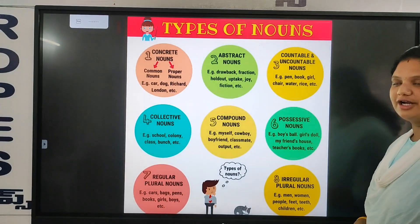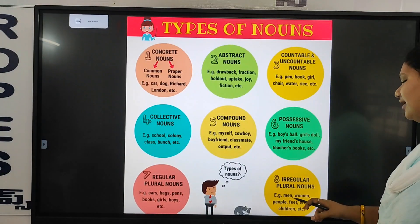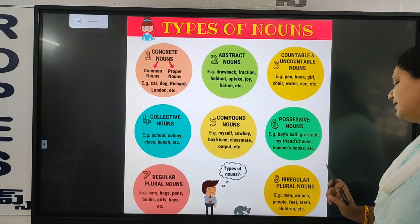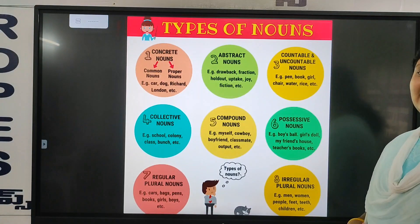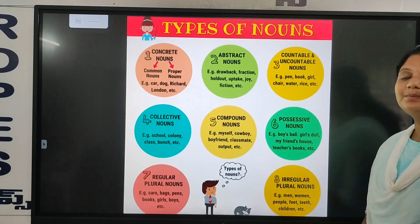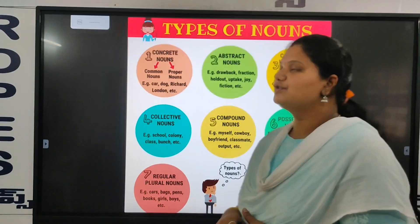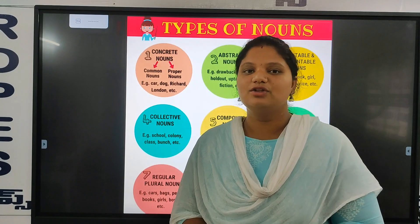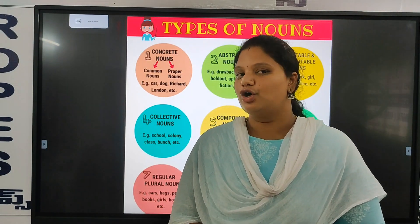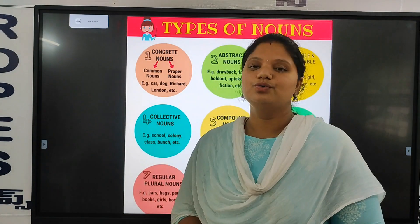Next one is irregular plural nouns. Irregular plural nouns are: men, women, people, feet, teeth, children, etc. We consider all of these as irregular plural nouns. So this covers the types of nouns.